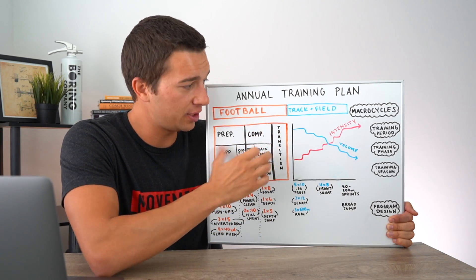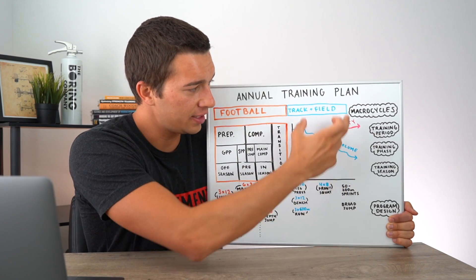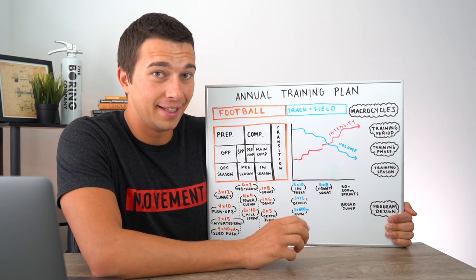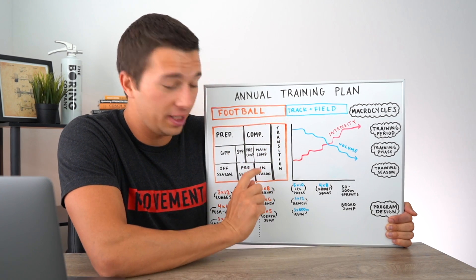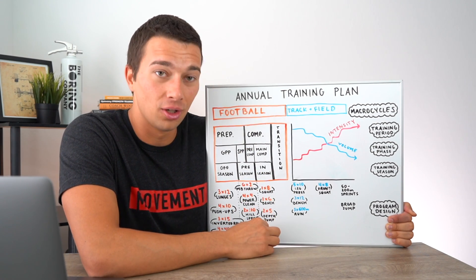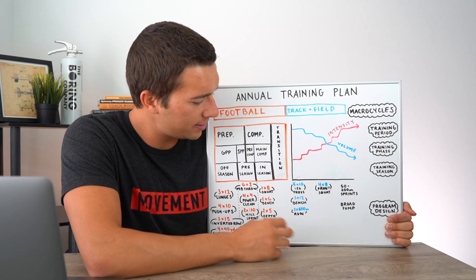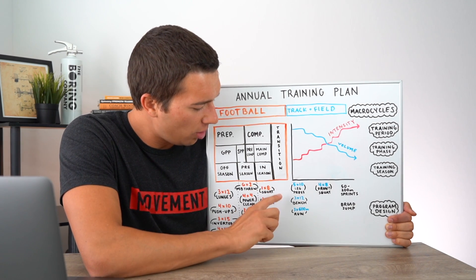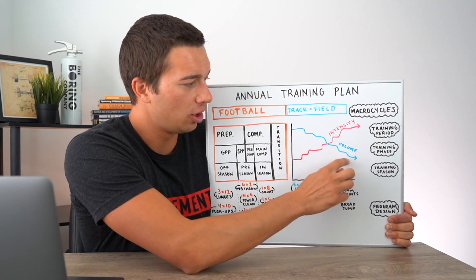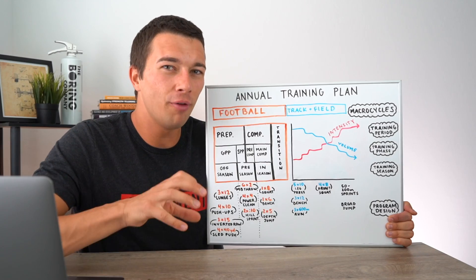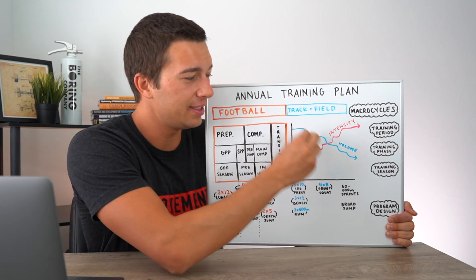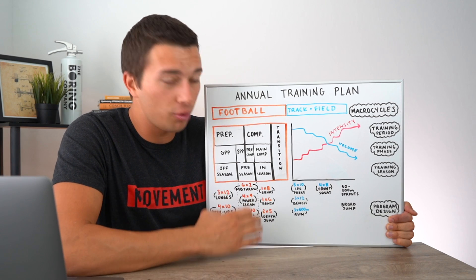We're doing the same linear periodization trend on this macro cycle as we are on the other — just shown in two different ways. As we move into the competition period — the pre-competition and main competition phase, or in-season — we're going to be doing lower volume training: one or two sets of squats, bench, depth jumps. We can still be doing sport-specific movements here, but again at lower volume and higher intensity. Hopefully this is helping you make the connections between the goals of the annual training plan, these big-picture graphs, and the actual program design considerations.